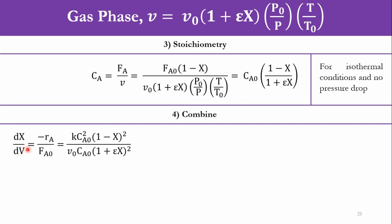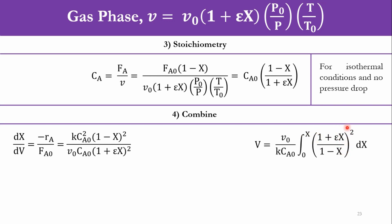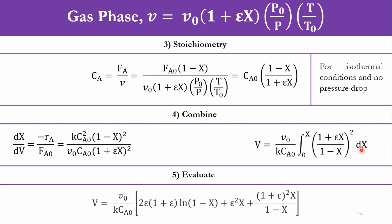Combining: dX/dV = −rA/FA0, where −rA = k·CA² = k·CA0²(1−X)²/(1+εX)², and FA0 = V₀·CA0, so CA0 cancels. Integrating: V = (V₀/k·CA0) ∫₀ˣ [(1+εX)/(1−X)]² dX. Evaluating this integral gives: V = (V₀/k·CA0) · [2ε(1+ε)·ln(1/(1−X)) + ε²X + (1+ε)²·X/(1−X)]. This is the overall representation for the second-order gas phase system in tubular reactors.